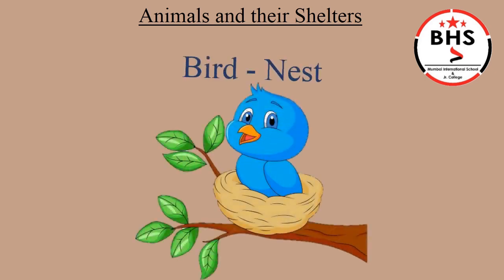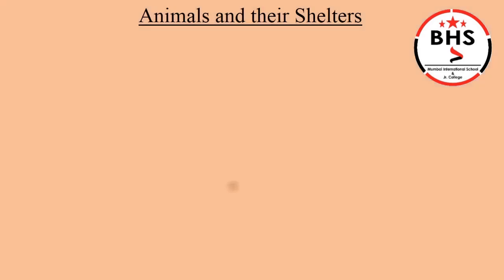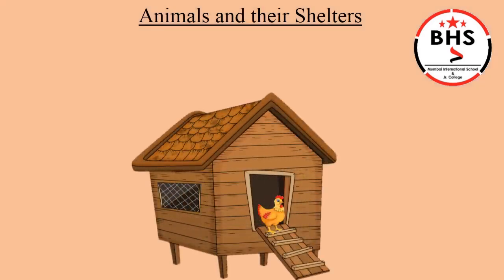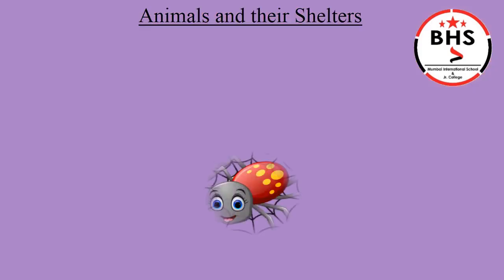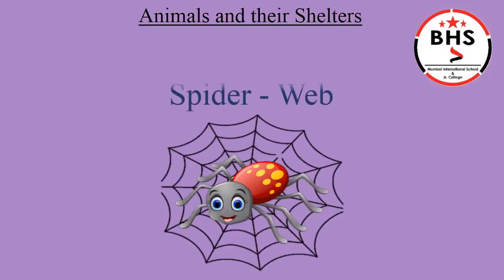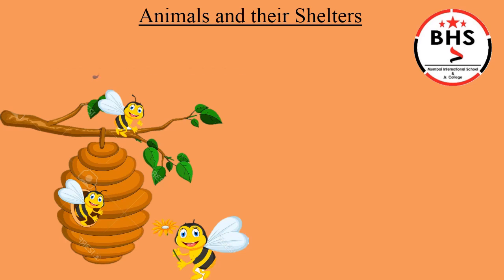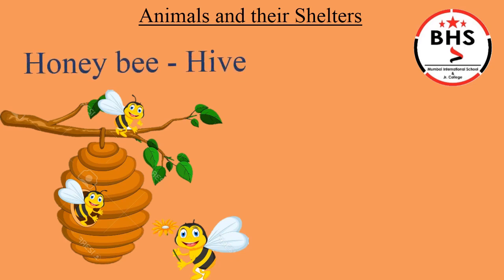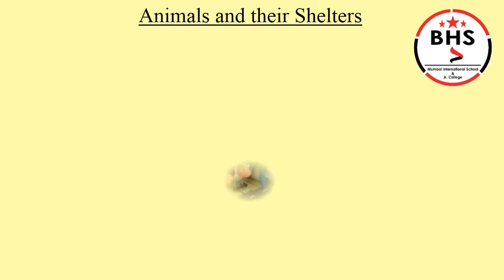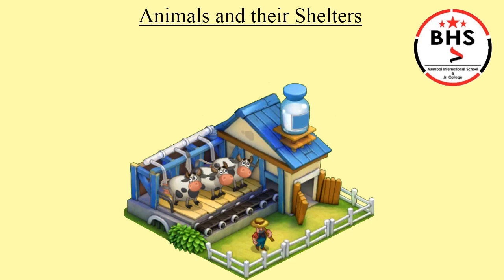The house of a bird is nest. The house of a hen is coop. The house of spider is web. The house of honeybee is hive. The house of cow is shed.